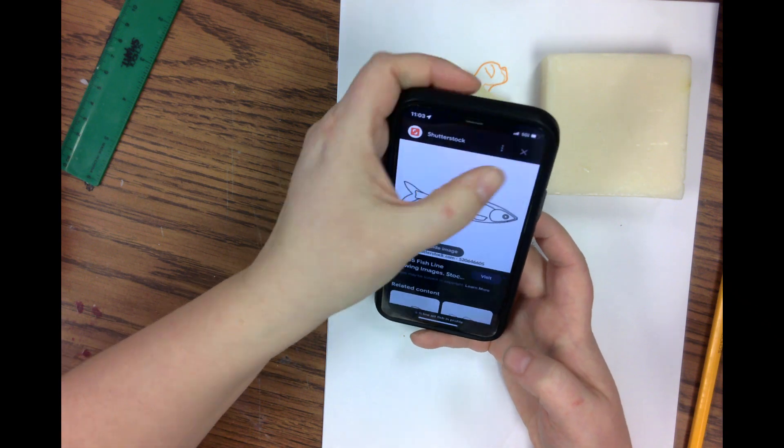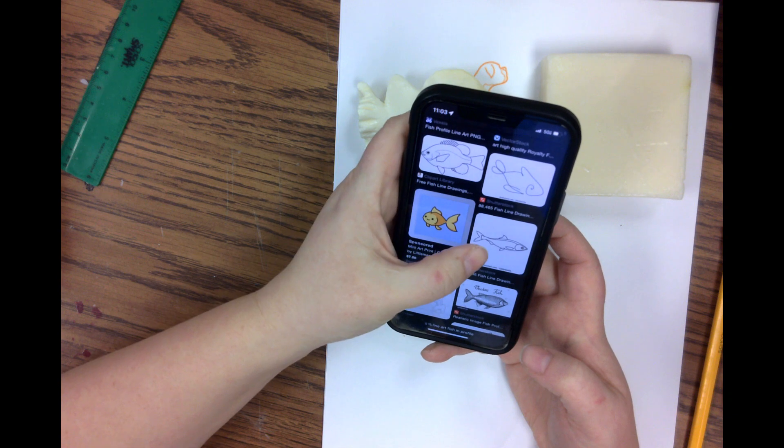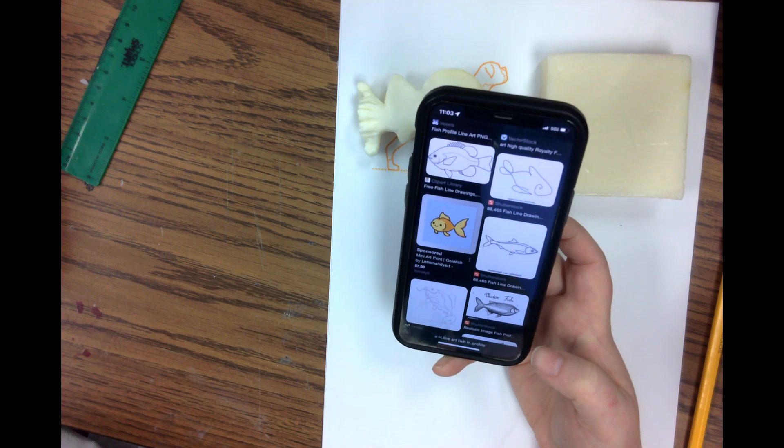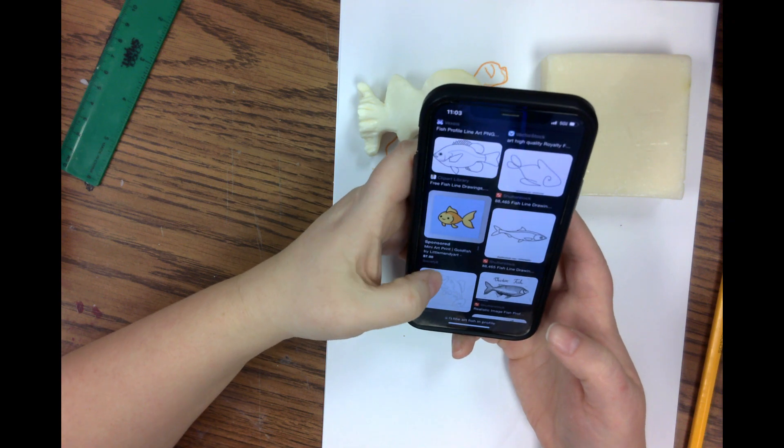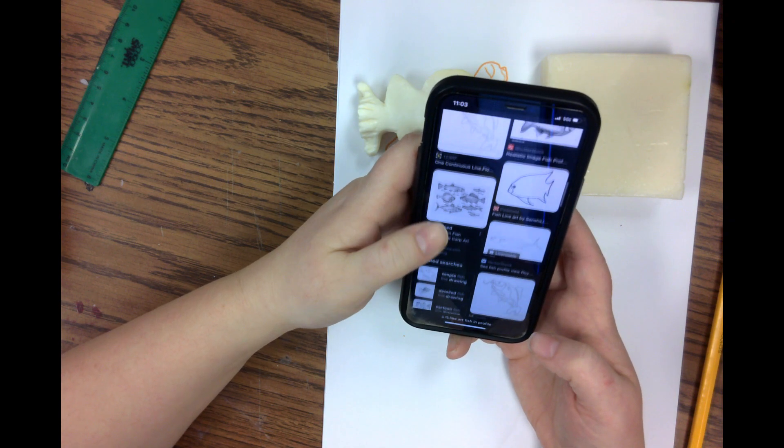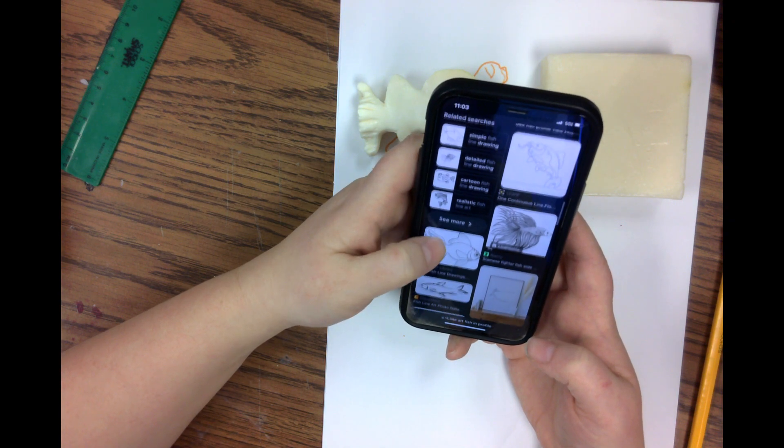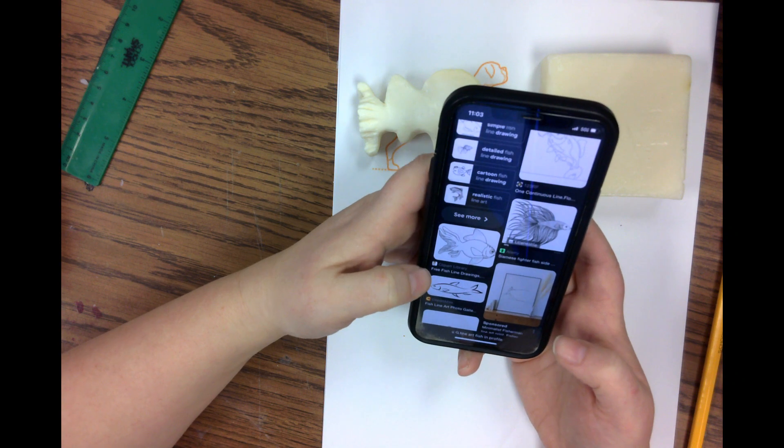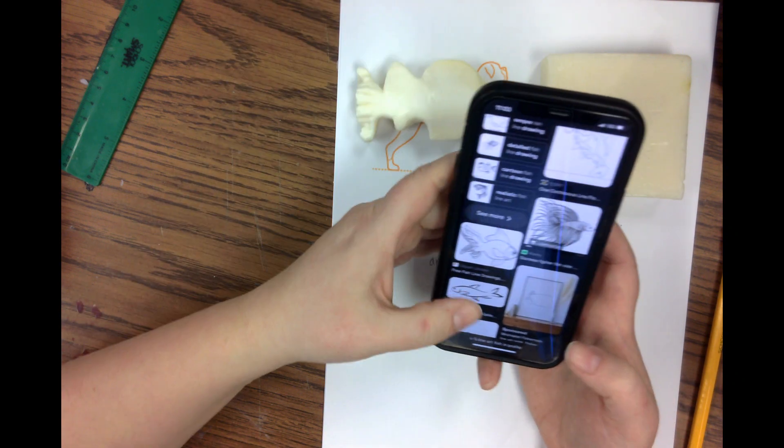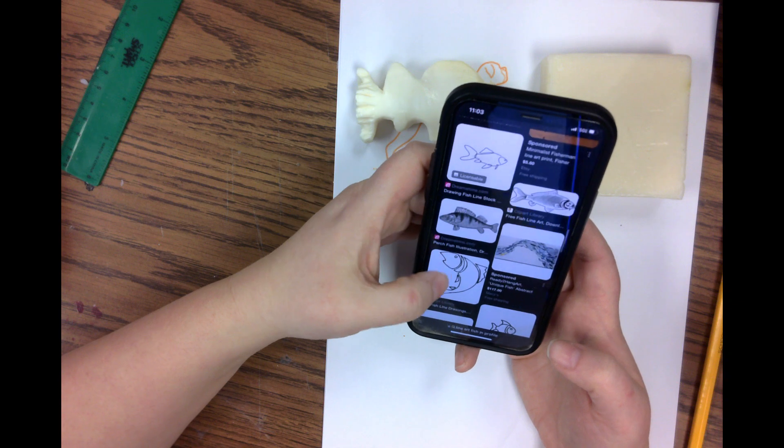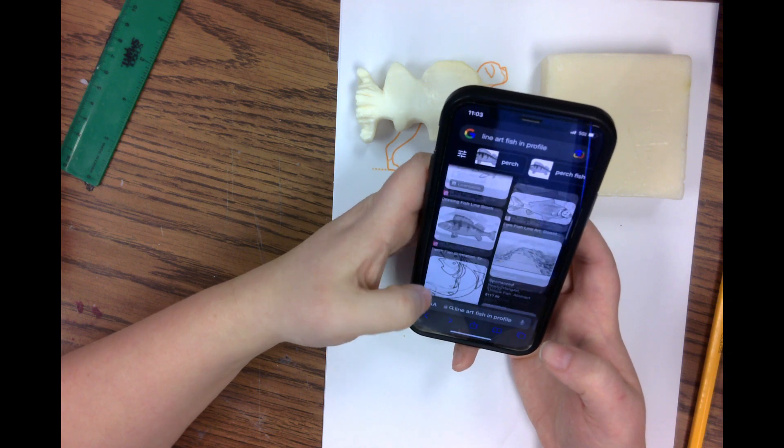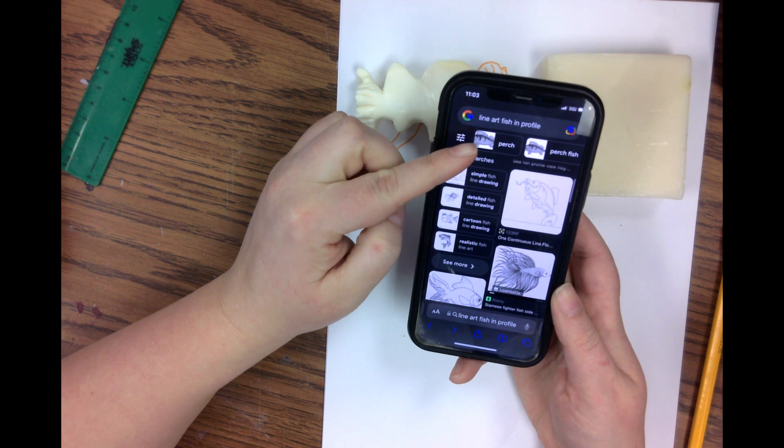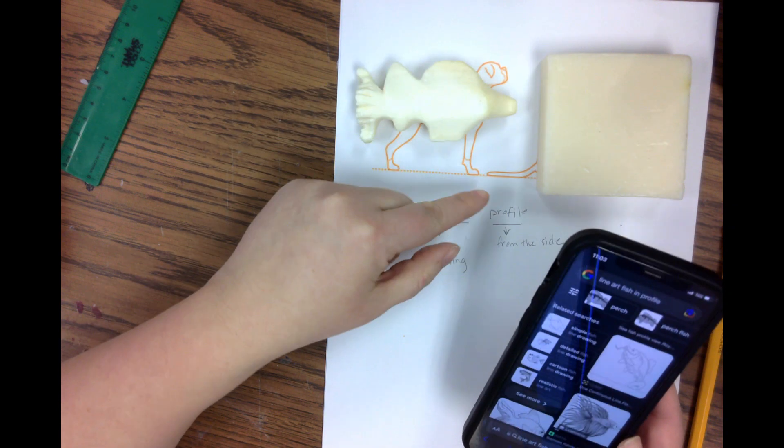But it wouldn't be a good one too, because it's so delicate. If we're going to do in the round, you would look for something that fits what you want to do. I don't see this fish there today, but this is how I got this design. I went online and I searched line art fish in profile, and I got something that is very carvable, okay?